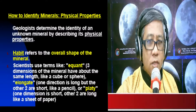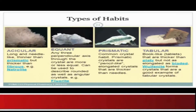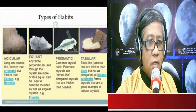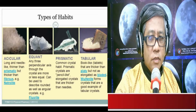Other examples of mineral habit include: acicular — long and needle-like; equant — any three perpendicular axes through the crystal are more or less equal, like a cube; prismatic — pencil-like crystals; and tabular or book-like — the mineral exhibits a book-like shape. So habit again refers to the overall shape of the mineral.